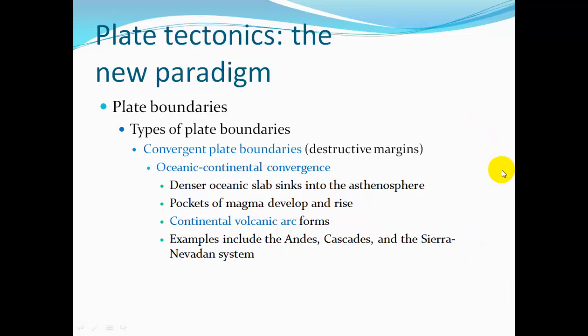At convergent plate boundaries — destructive margins — we have ocean-continental convergence, where the ocean meets the continent. The denser ocean slab sinks into the mantle. It's denser because it's made of basaltic rock, which is full of heavier dark silicates. So it's forced below the lighter continental rock. Pockets of magma develop and rise up, forming continental volcanic arcs of mountains, such as the Andes, the Cascades, and the Sierra Nevada.